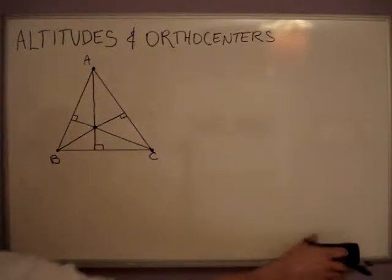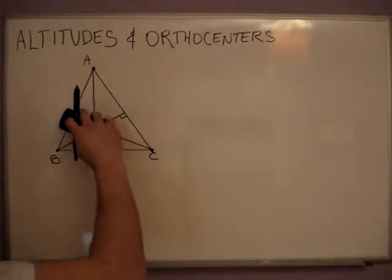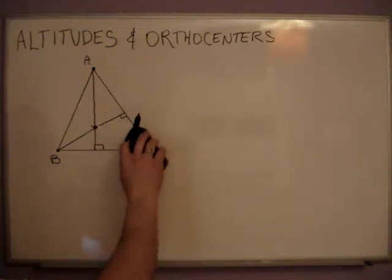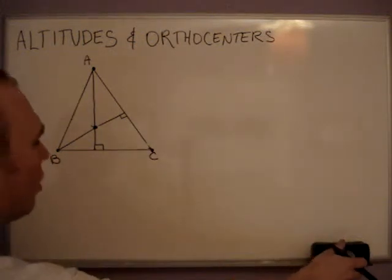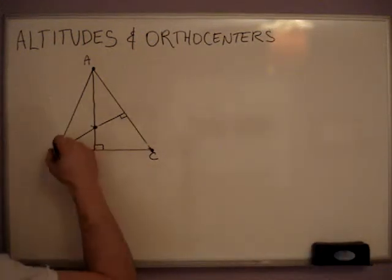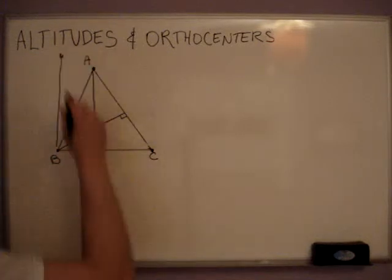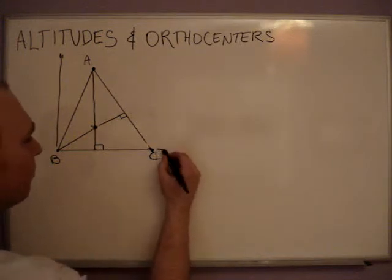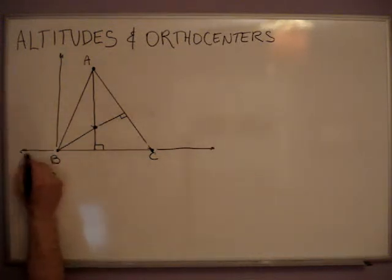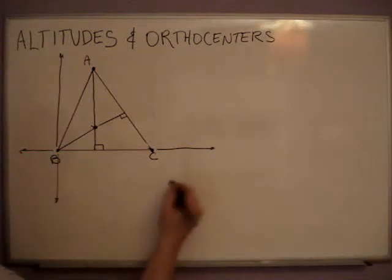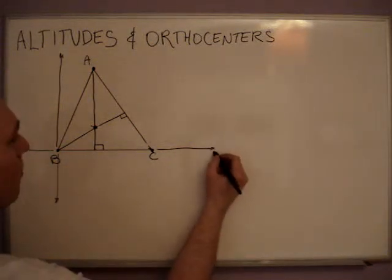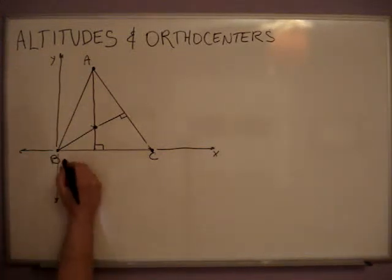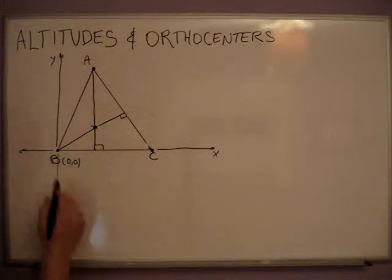And now I'm going to go into how this is used. I'm going to get rid of one of these to show you. Now in a problem, it will probably give you a triangle like this. I'm going to put it in a coordinate plane so we can see what we're doing here and put it in context on how it's going to be on a quiz or test. This is your x-axis and your y-axis.